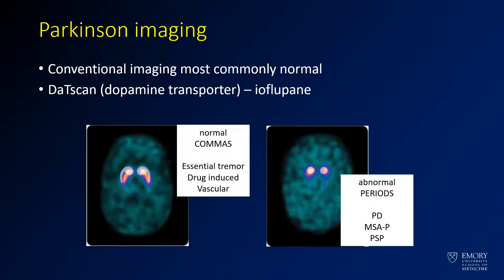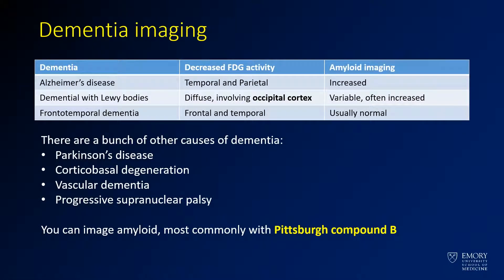For Parkinsonian imaging, DAT scans show normal uptake in the caudate and putamen. In abnormal patients you lose the putamen, going from a comma shape (normal) to a period shape (abnormal). For dementia imaging: Alzheimer's disease involves the temporal and parietal lobes; Lewy body dementia involves the occipital cortex; frontotemporal dementia involves the frontal and temporal lobes, just like the name. Amyloid can be imaged with Pittsburgh Compound B or newer direct amyloid imaging agents.